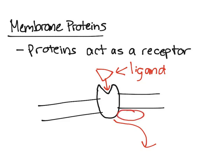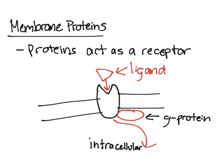Right there in the intracellular part of the cell is a G protein. The ligand activates the receptor, and the receptor then activates the G protein, essentially passing the signal off. The G protein then goes off to the side.